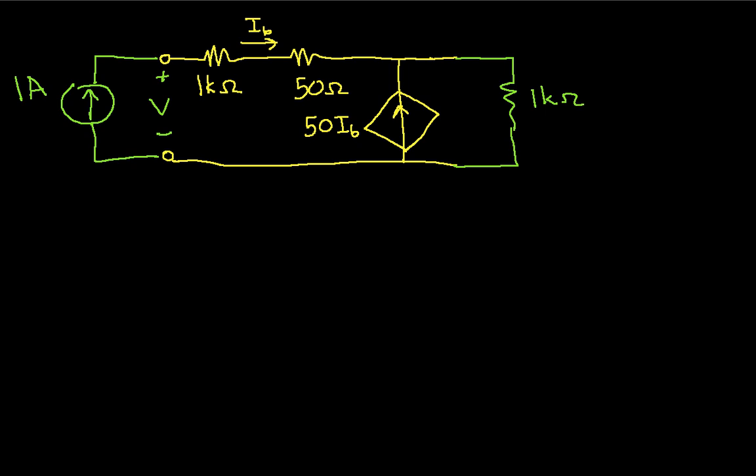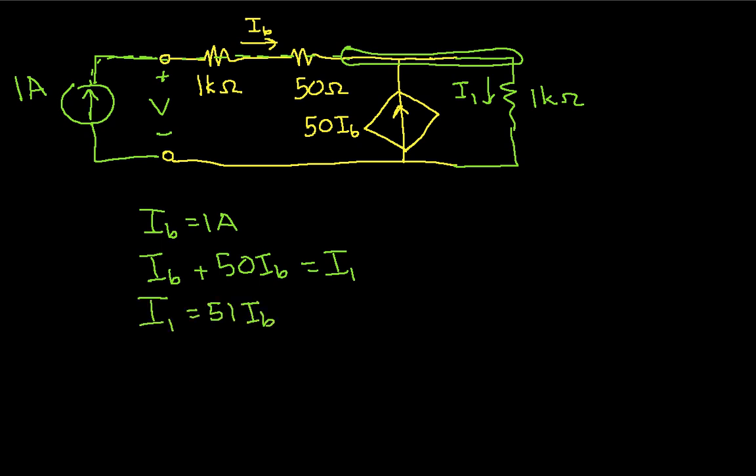Okay, so if I look at the way things are set up then, I sub b is equal to 1 amp because all of the current that flows through here also comes from the source. So we have then I sub b is 1 amp. We can apply Kirchhoff's current law, and let's define this as an I1. And so the current flowing into the node is I sub b plus 50 I sub b. The current flowing out is I1. So that says that I1 is 51 I sub b, which is 51 amps.